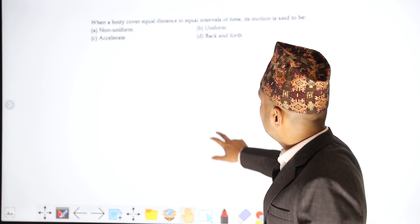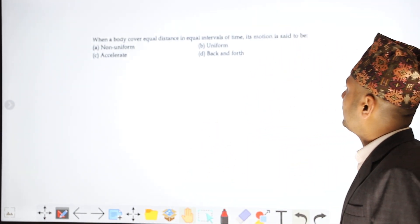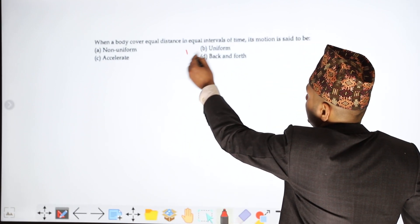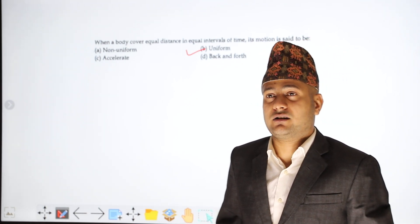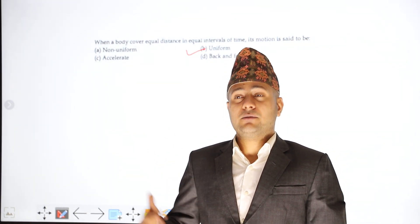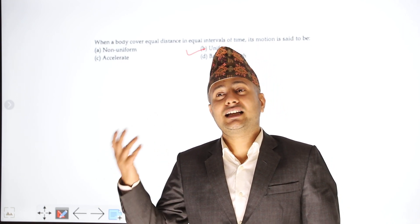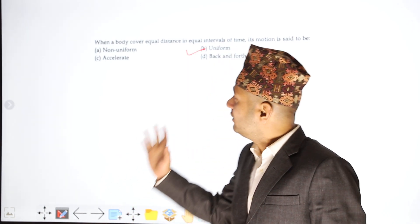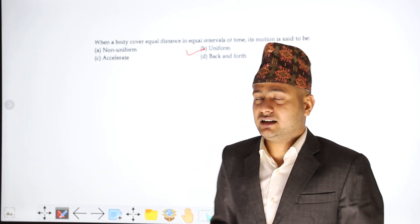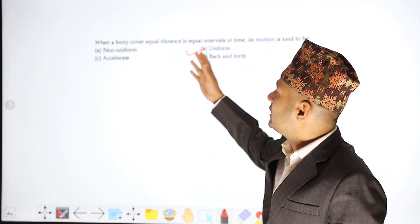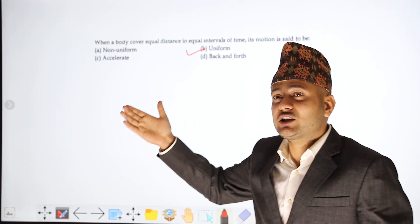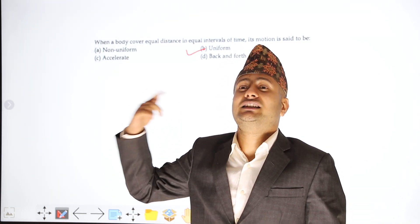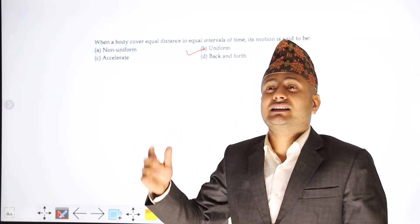Next: when a body covers equal distance in equal intervals of time, it is said to be in uniform motion. For example, every second the body covers the same distance — 10 meters each second — that is uniform motion. Equal distance covered in equal time intervals.